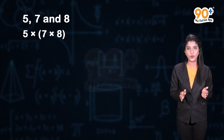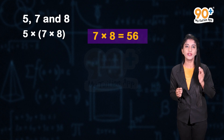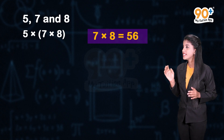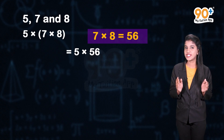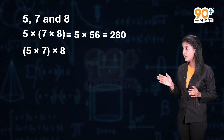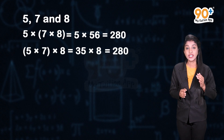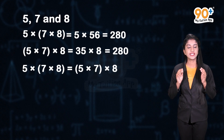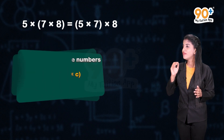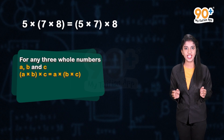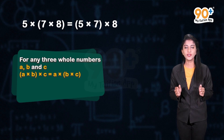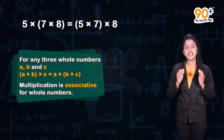Next, let us check whether multiplication is associative for whole numbers or not. Let us take three whole numbers 5, 7 and 8. What is 5 × (7 × 8)? We know that 7 × 8 = 56, therefore 5 × (7 × 8) = 5 × 56 = 280. Now, what is (5 × 7) × 8? That is equal to 35 × 8 = 280. So we can observe that 5 × (7 × 8) = (5 × 7) × 8. In general, for any three whole numbers A, B and C, (A × B) × C = A × (B × C). So we can say that multiplication is associative for whole numbers.